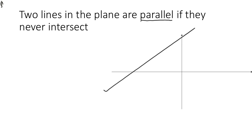If I draw a line that is steeper than the black line, then it's pretty clear that somewhere up here they're going to have to intersect. So these two lines can't be parallel.